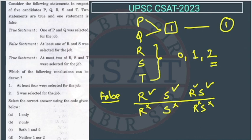So, the first statement is saying at least four. We cannot select four. So, the first statement is wrong.